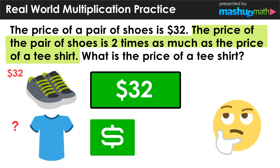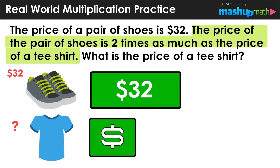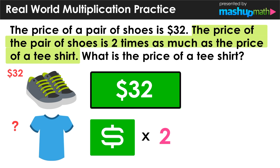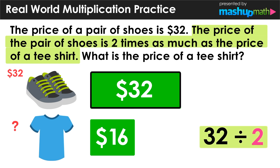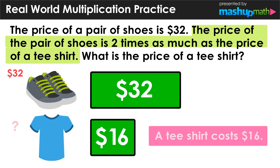So now we can start to think about how we can use this information to find the price of the t-shirt. Whatever that t-shirt costs, I can see here that multiplying that number by two would have to equal the price of the sneakers, which I know is $32. So now we can think about what number multiplied by two would equal 32. Using number sense or inverse operations, I know that I can divide 32 by two and determine that the price of the t-shirt is $16, because 32 divided by two is 16. So our final conclusion is that the price of one t-shirt is $16.